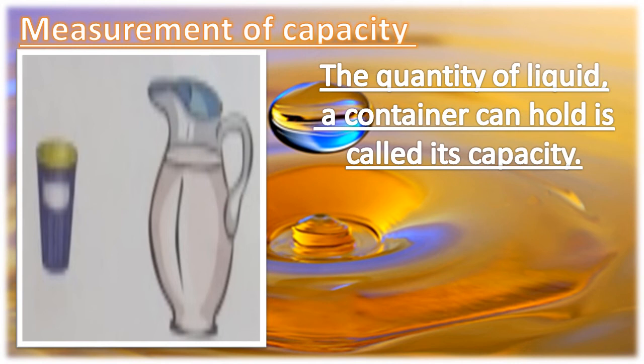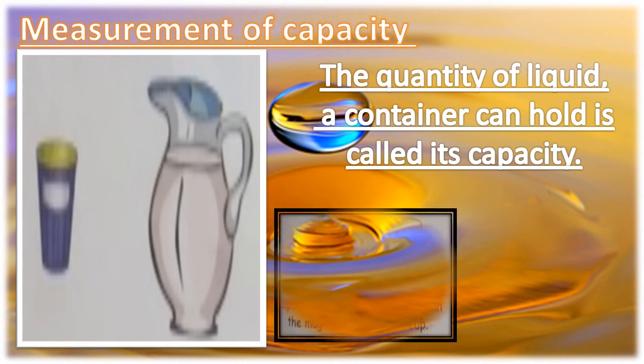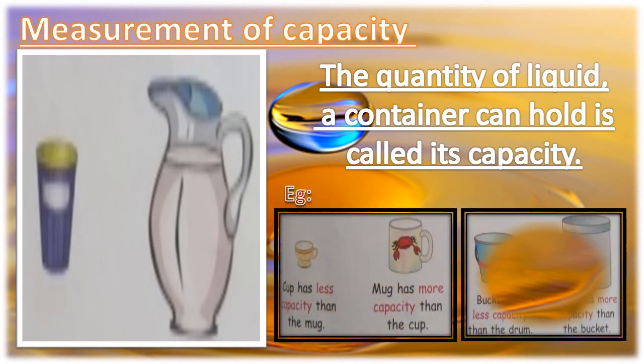Bigger vessels have more capacity and smaller vessels have less capacity. See the pictures. Here, mug and drum have more capacity because these are bigger than cup and bucket. Cup and bucket are smaller, so they have less capacity.